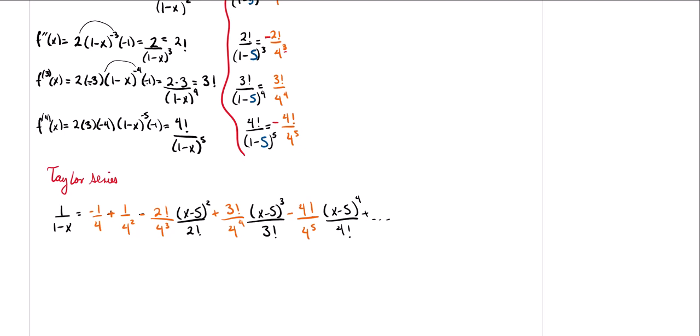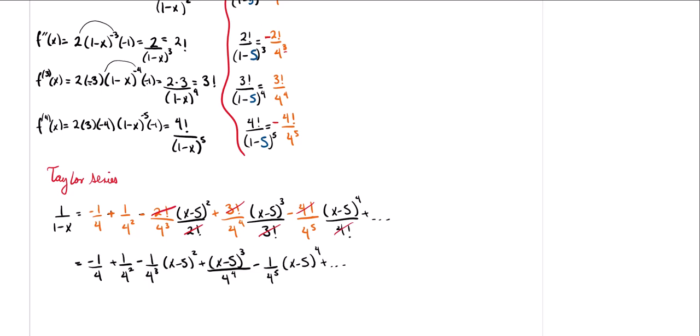Once simplified, we get a nice alternating series. At this point, I'm going to ask you to pause the video and see if you can write this power series in summation notation as n goes from 0 to infinity. Notice that the series is alternating, so it will have a particular sign factor. Think about the terms we have here, pause the video, and when we meet back we can compare our answers.